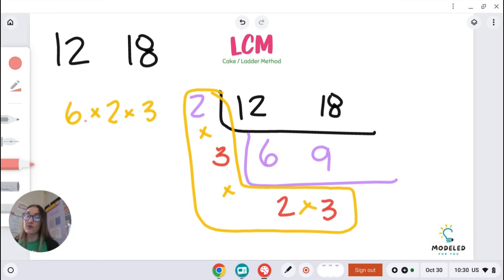Now I'm going to do the order of operations. I'm going to go in order of my expression. 6 times 2 is 12. Bring down my times 3. 12 times 3 is 36.